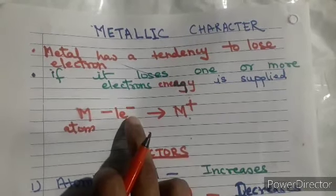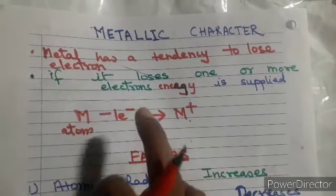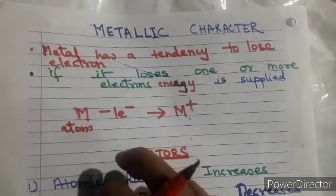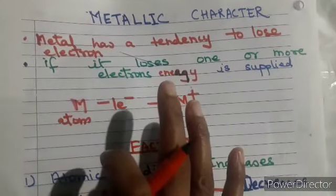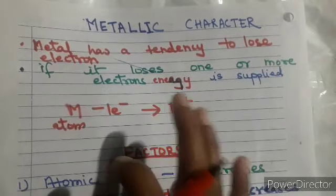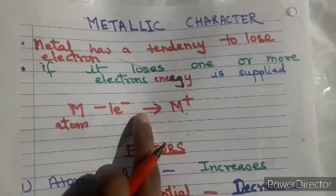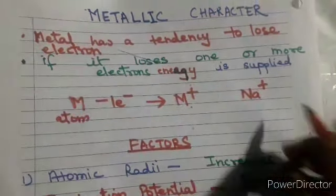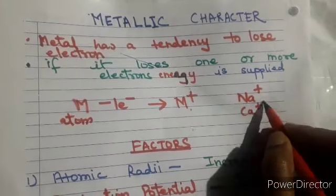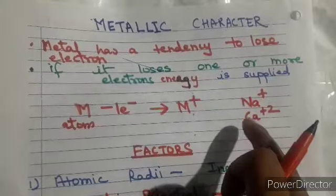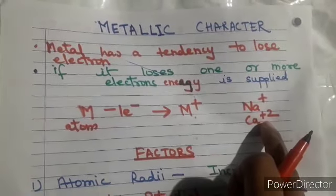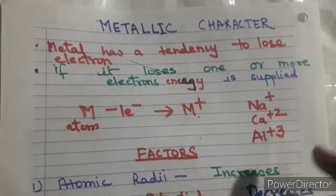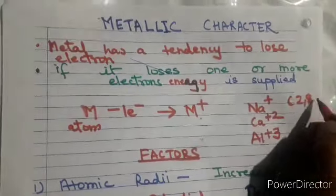Metals have the tendency to lose one or more than one electron — maximum three electrons, and in some special cases, four electrons. But mainly metals lose one, two, or three electrons from the outermost orbit. For example, Na acquires a plus charge by losing one electron; Ca²⁺ loses two electrons; and Al³⁺ loses three electrons to convert to a cation.